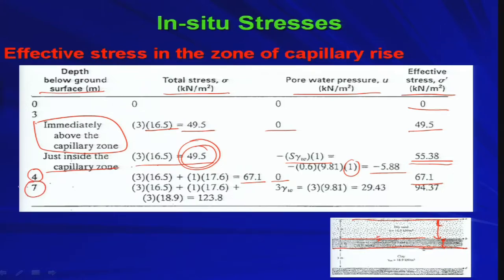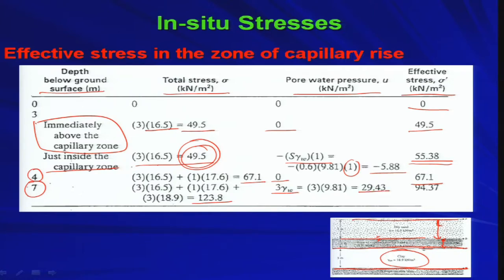At depth 7 meter — the bottom of the clay layer: total stress = 3 × 16.5 + 1 × 17.6 + 3 × 18.9 = 123.8 kN/m², where 18.9 is the saturated unit weight and 3 meters is the depth of the clay layer. Pore water pressure = 3 × γ_w = 29.43 kN/m². Therefore effective stress = 123.8 - 29.43 = 94.37 kN/m².